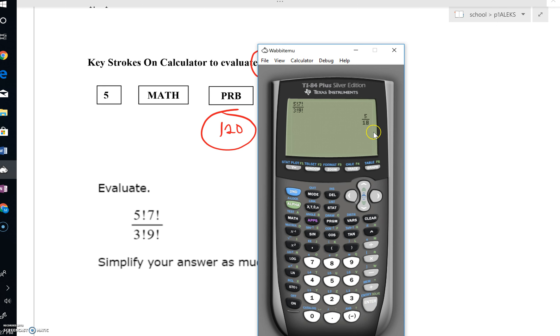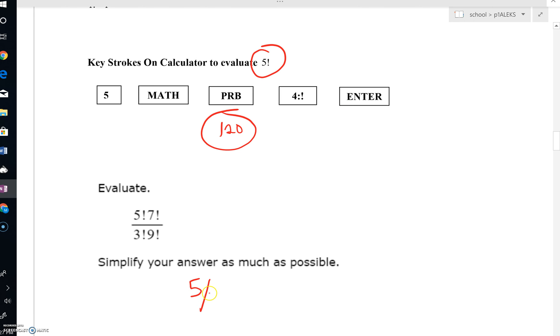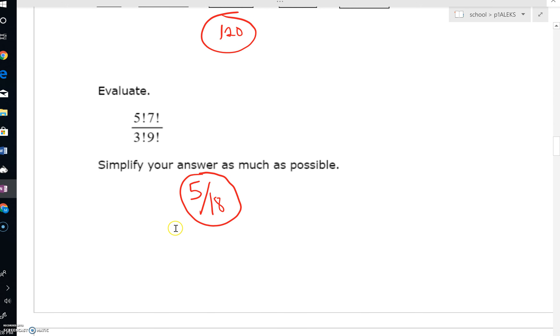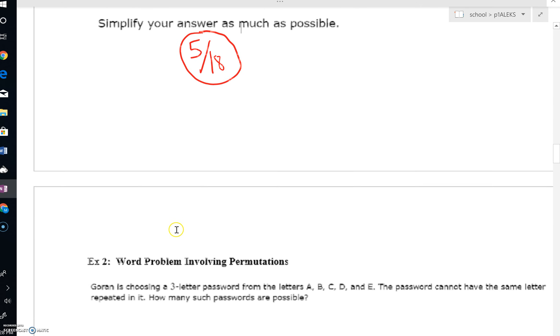And then we'll have five over 18. So what's really nice about this is your calculator will break this down for you. You don't have to write everything out in super detail, going five times four times three times two times one, and have all those multiplications. If you do, you'd notice there would be a lot of canceling. But thank goodness your calculator can do that very quickly.